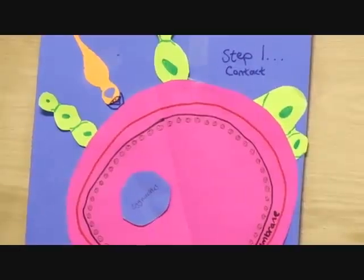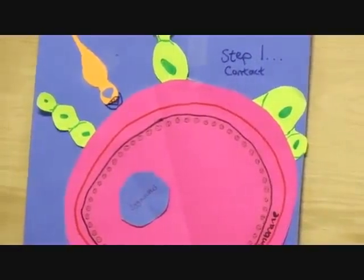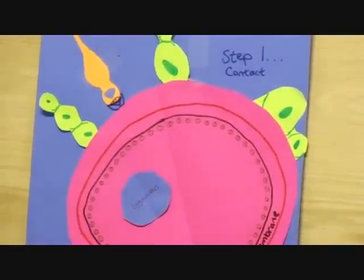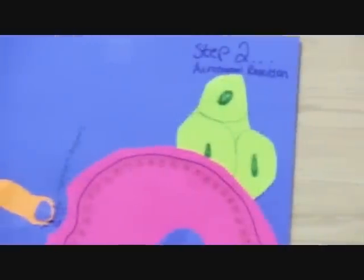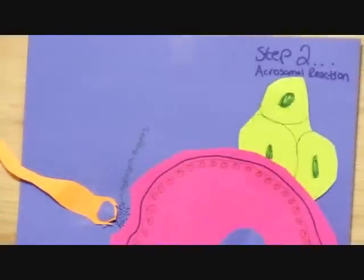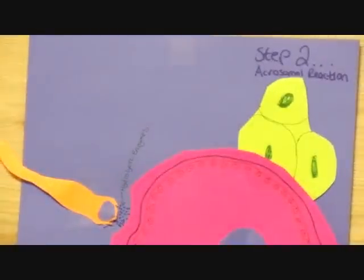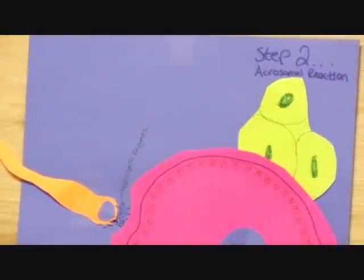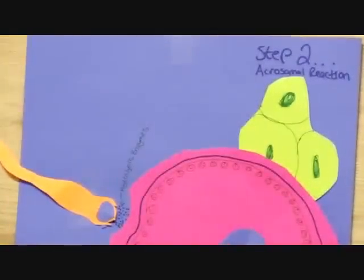In the next video, it will show the receptor molecules. Step 2: Acrosomal reaction. This binding induces the acrosomal reaction, in which the sperm releases digestive enzymes into the zona pellucida.